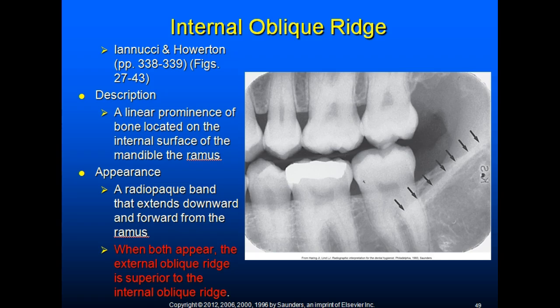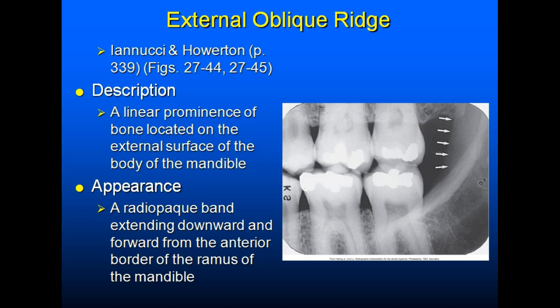The internal oblique ridge, also known as the internal oblique line, is a linear prominence of bone on the internal surface of the mandibular ramus, appearing as a radiopaque band extending downward and forward from the ramus. The external oblique ridge, or external oblique line, extends from the anterior border of the ramus and typically ends in the mandibular third molar region, appearing as a radiopaque band extending downward and forward from the anterior border of the ramus. When both ridges appear, the external ridge is superior to the internal ridge.